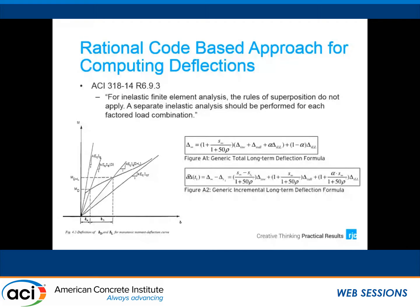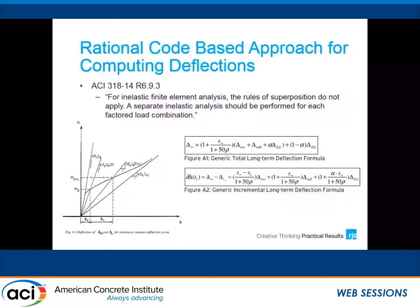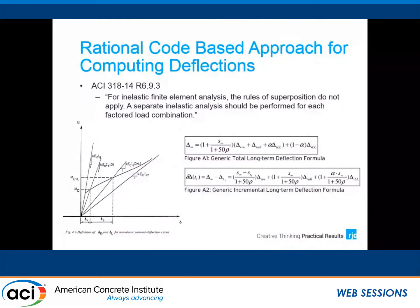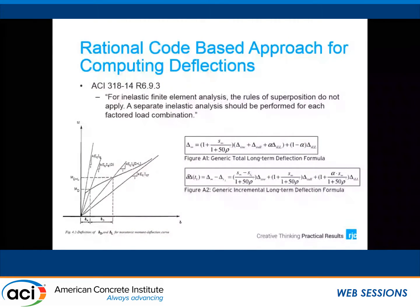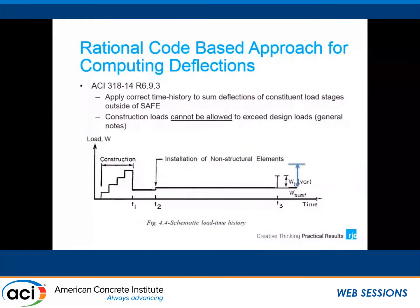ACI also recognizes — further to Dylan's presentation — that in calculating long-term deflections on slabs, we really have to do non-linear time history analysis, accounting for early age properties and early age loads during construction, before applying our design loads with 28-day slab properties. We're using our SAFE analysis to run multiple analyses under different material properties and different loading conditions, pulling those values out of the software and doing a proper summation using these equations.